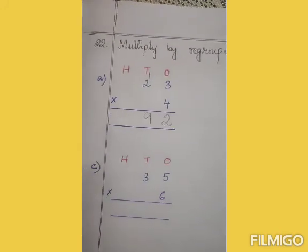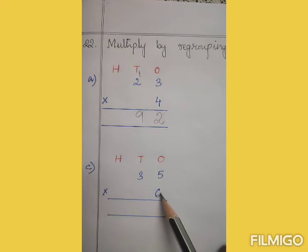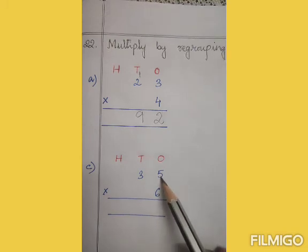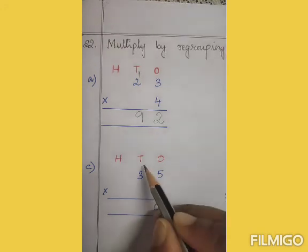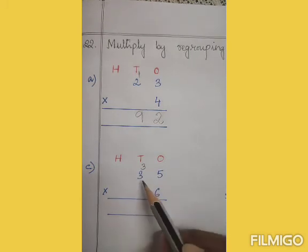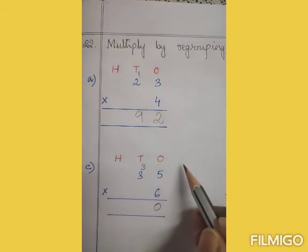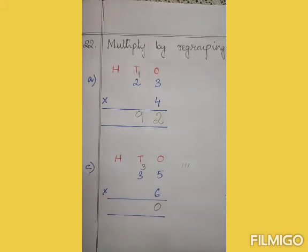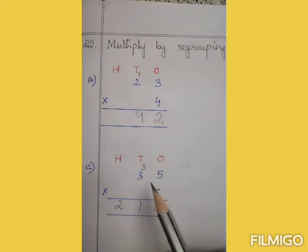Next, question number C: 35 into 6. First 6 into 5, then 6 into 3. 6 fives are 30 — we write 0 here and 3 is carried over. Now 6 into 3: 6 threes are 18. 18 plus 3 is 21. So we write 21, and the answer is 35 into 6 is equal to 210.